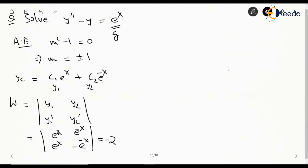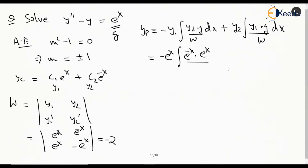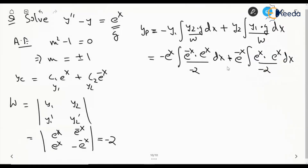e to the power of x will be treated as g. So the particular integration yp is going to be: minus y1 times the integral of y2 times g over W dx, plus y2 times the integral of y1 times g over W dx. So y1 is e to the power of x, y2 is e to the power of minus x, g is e to the power of x, and W is minus 2.